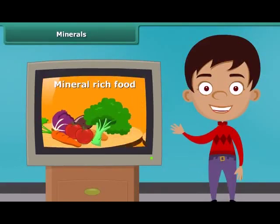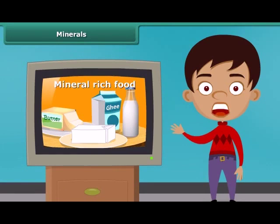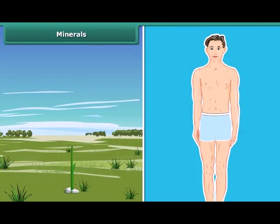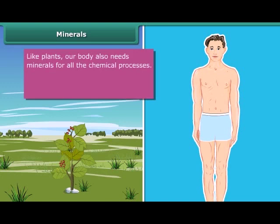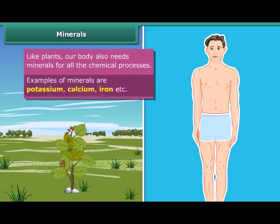You might have seen many advertisements of mineral-rich food items. Now let's know why they are so important. Actually, plants need minerals for growth. Besides this, a body also requires minerals in small quantities for all the chemical processes. Potassium, calcium, iron, etc. are some common examples of these minerals. Let us know more about the sources and the role of these minerals using the next table.